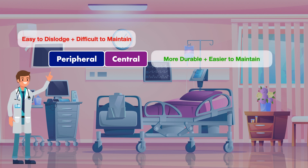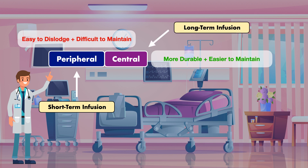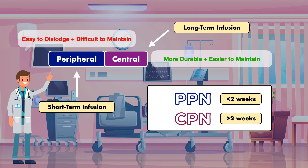Since peripheral catheters are easy to dislodge and more difficult to maintain, PPN is only recommended for short-term infusion. If a patient is going to require a long-term infusion, they should absolutely receive CPN. As a general rule of thumb, PPN can be considered if the length of infusion is less than two weeks, and CPN should be used if the infusion is expected to last for more than two weeks. This doesn't mean that CPN cannot be used for infusions lasting less than two weeks — it is just to point out that once the two-week mark approaches, it is strongly encouraged. If the amount of time is unclear, or there is an inability to have a central catheter placed in a timely manner, patients can be started on PPN and it can be transitioned to CPN at a later time. When used in this way, you will hear PPN being called a bridge to CPN.